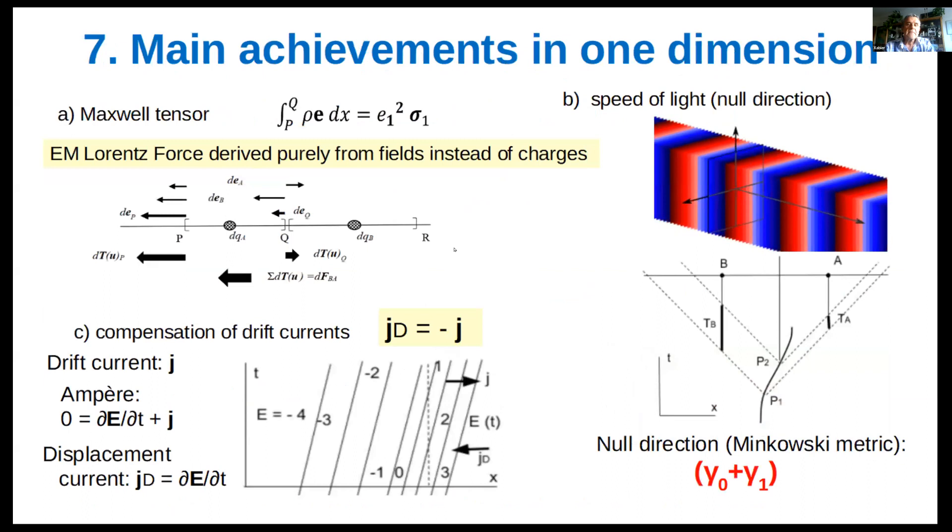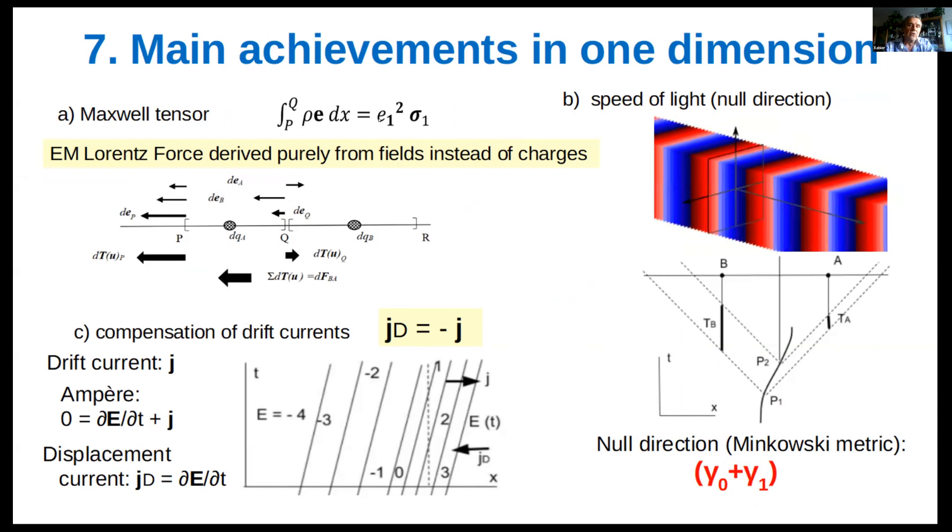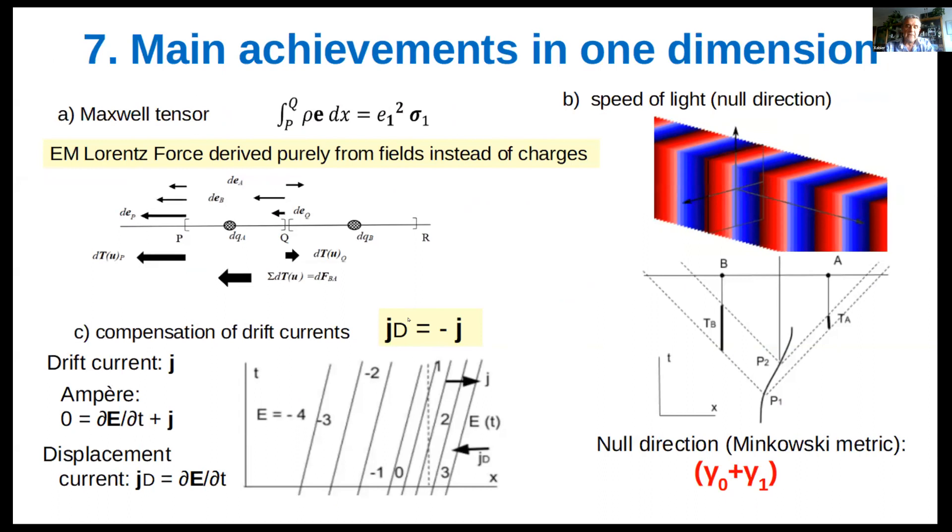Some interesting physical results appear already in one dimension. The Lorentz force between two parts of an electromagnetic system can be calculated directly from the field values. This is a global alternative to local equations based on charges, like Coulomb's law. The null propagator for potentials appears already in one dimension, where the question about its physical meaning remains open.